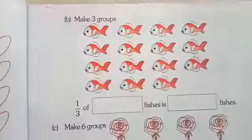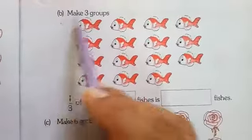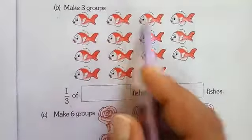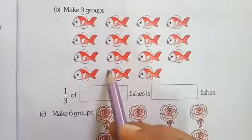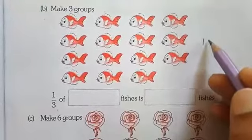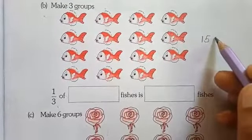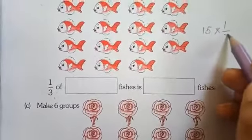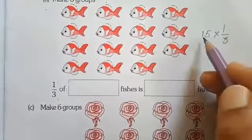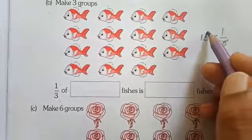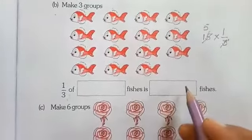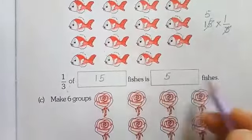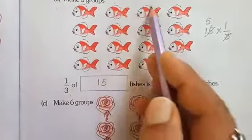Now we'll see the second question — make three groups again. How many fishes can you see? 1, 2, 3, 4, 5, 6, 7, 8, 9, 10, 11, 12, 13, 14, 15 — so 15 fishes. We have to find 1 third of 15 fishes. In the 3 times table, 3 fives are 15, so 1 third of 15 fishes is 5 fishes. So 1, 2, 3, 4, 5 is the one-third part of 15.